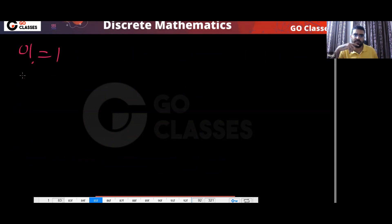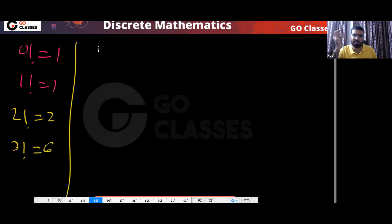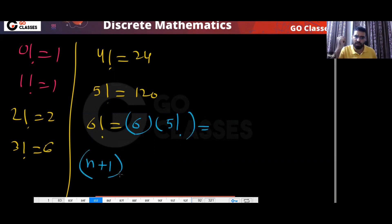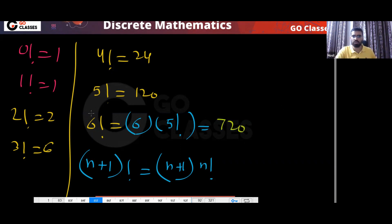You should remember all these basic values: zero factorial and one factorial are both one; two factorial is two; three factorial is six; four factorial is 24; five factorial is 120. Six factorial — that will be six multiplied by five factorial — so that is 720. These things you should directly remember.